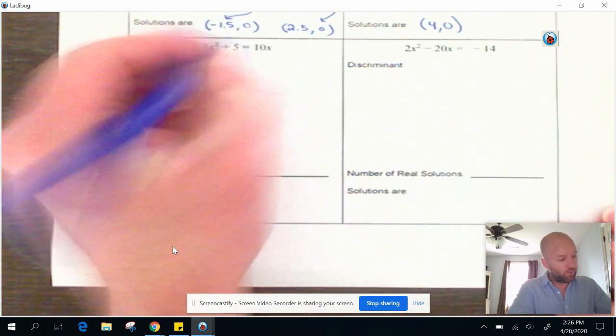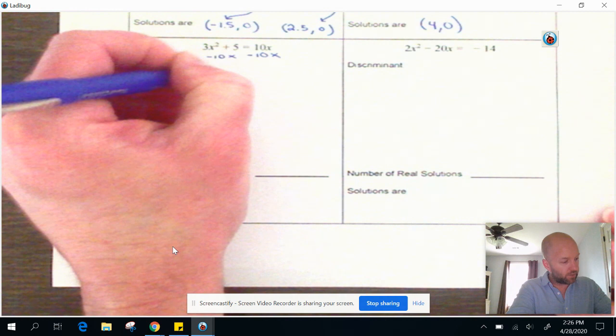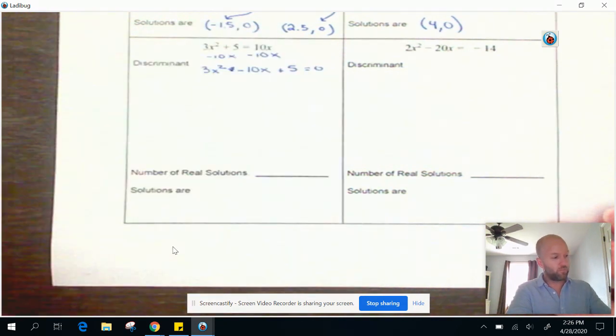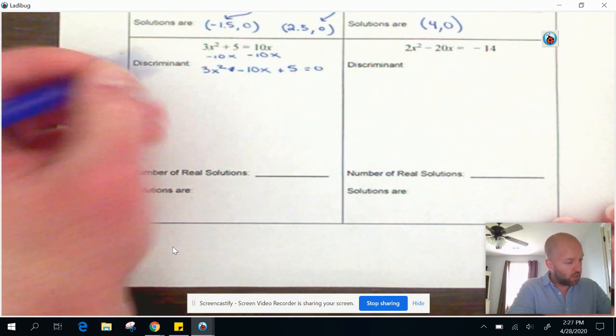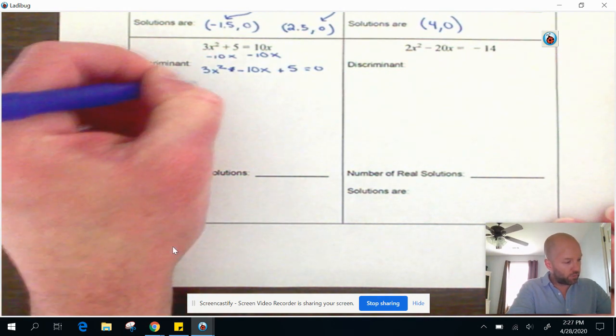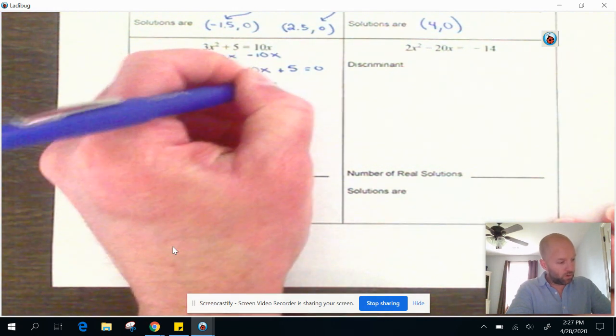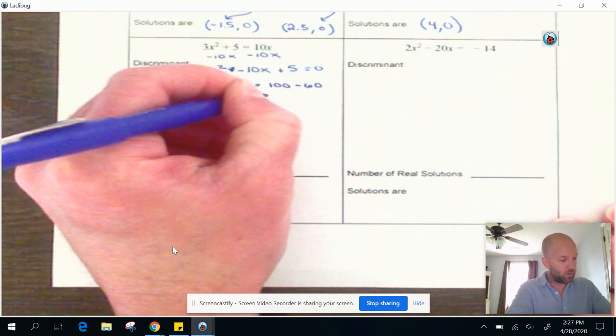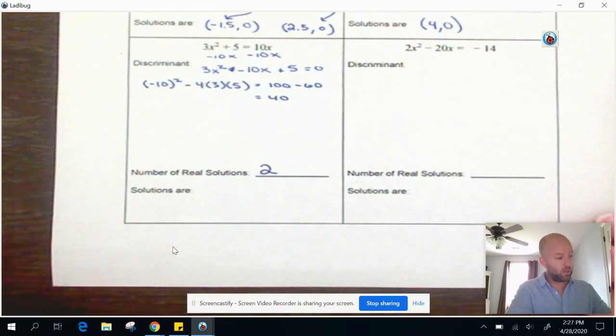So we've got this. Now, this is not in standard form. So we need to take 10x and subtract it from both sides. And I'm going to rewrite this right here. So 3x squared minus 10x plus 5 equals 0. So A is 3, B is negative 10, and C is 5. So let's do this. For space sake, I'm just going to go ahead and plug in B squared is negative 10 squared minus 4 times 3 times 5, which is our A value and our C value. So this is 100 minus 12 times 5, which is 60, minus 60 equals 40. All right. So we have two solutions because the discriminant is greater than 0. Now let's go find those.